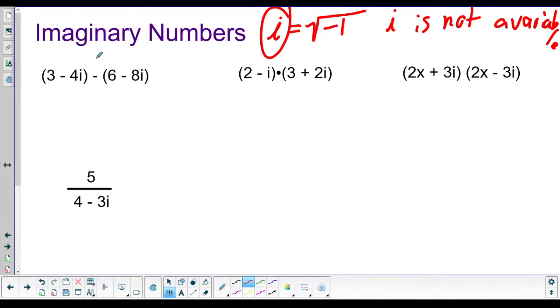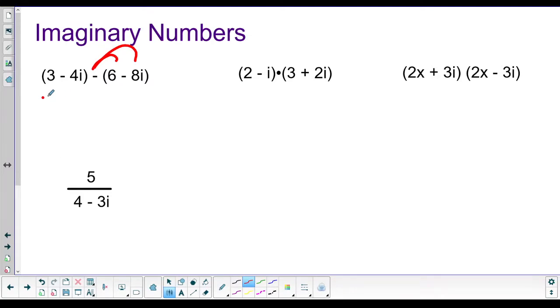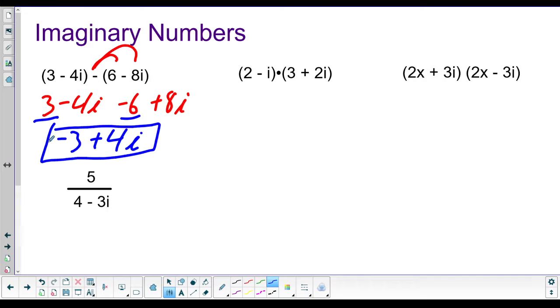So we've just got a couple example problems. So here we have a subtraction problem. So what we're going to do is we're going to subtract this complex number and this complex number. So the way you start that is you distribute the negative to the second one. So we have 3 minus 4i minus 6 plus 8i. Now you just combine your like terms. So 3 and negative 6 are both real. So 3 minus 6 is negative 3. And then negative 4i and plus 8i are both imaginary. So negative 4 plus 8 is positive 4i. And that's your answer.